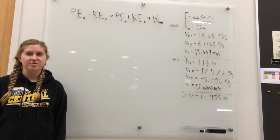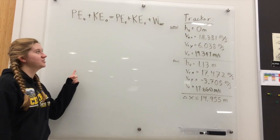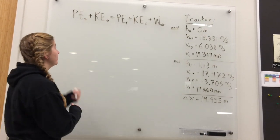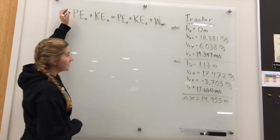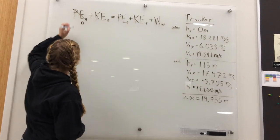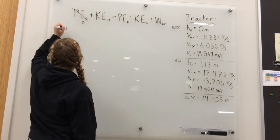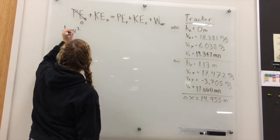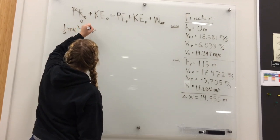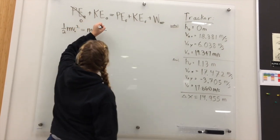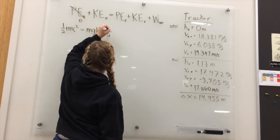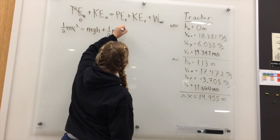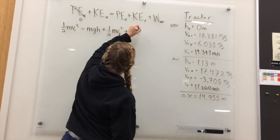Now that we know the velocities, we can plug them into the conservation of energy equation to find the work done by air resistance on the soccer ball. We know that the initial potential energy is zero, and we can write out the equation: one half mv² equals mgh plus one half mv² plus force times distance.